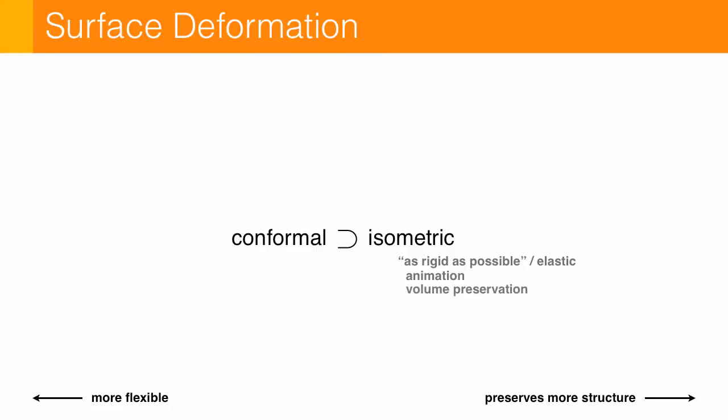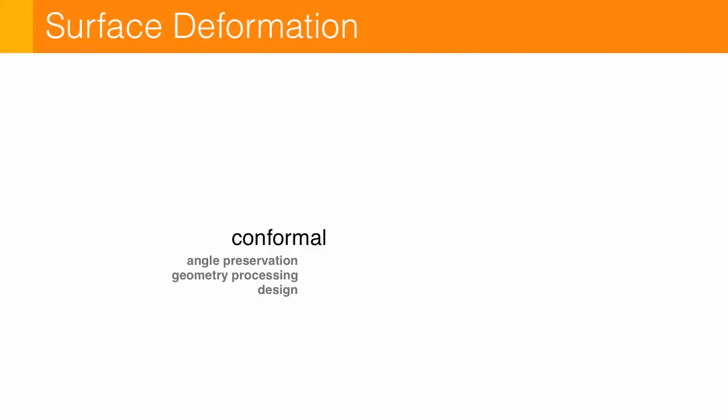On the other hand, in the conformal case, we ask only for angle preservation, which means we get a lot more geometric flexibility, which means we can take a look at a much broader range of geometry processing tasks. We also get a larger space for certain design applications, like maybe architectural geometry. So this is the case I'm going to focus on today.